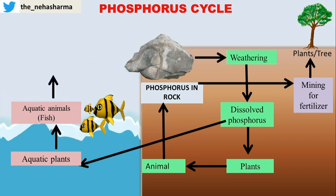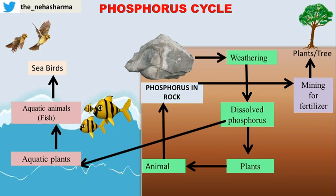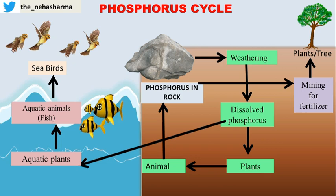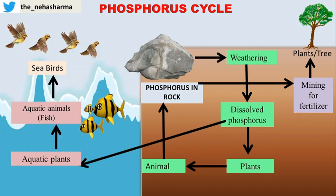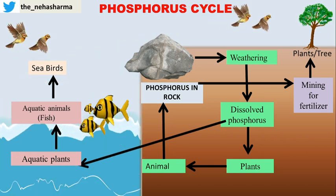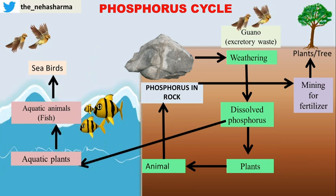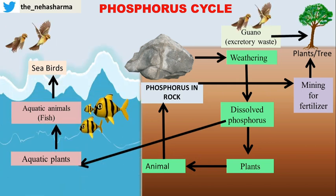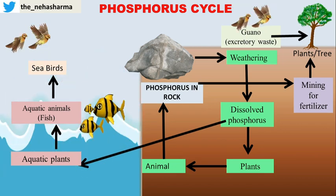There are certain seabirds which feed on fish — they dive into seawater and feed on fish, and therefore have a high content of phosphorus in their bodies. Whenever these seabirds travel to terrestrial areas, they release excretory waste known as guano. Guano, the excretory waste of seabirds, is extremely rich in phosphorus content and thereby provides a source of nutrition to plants and trees, circulating phosphorus among all living forms.